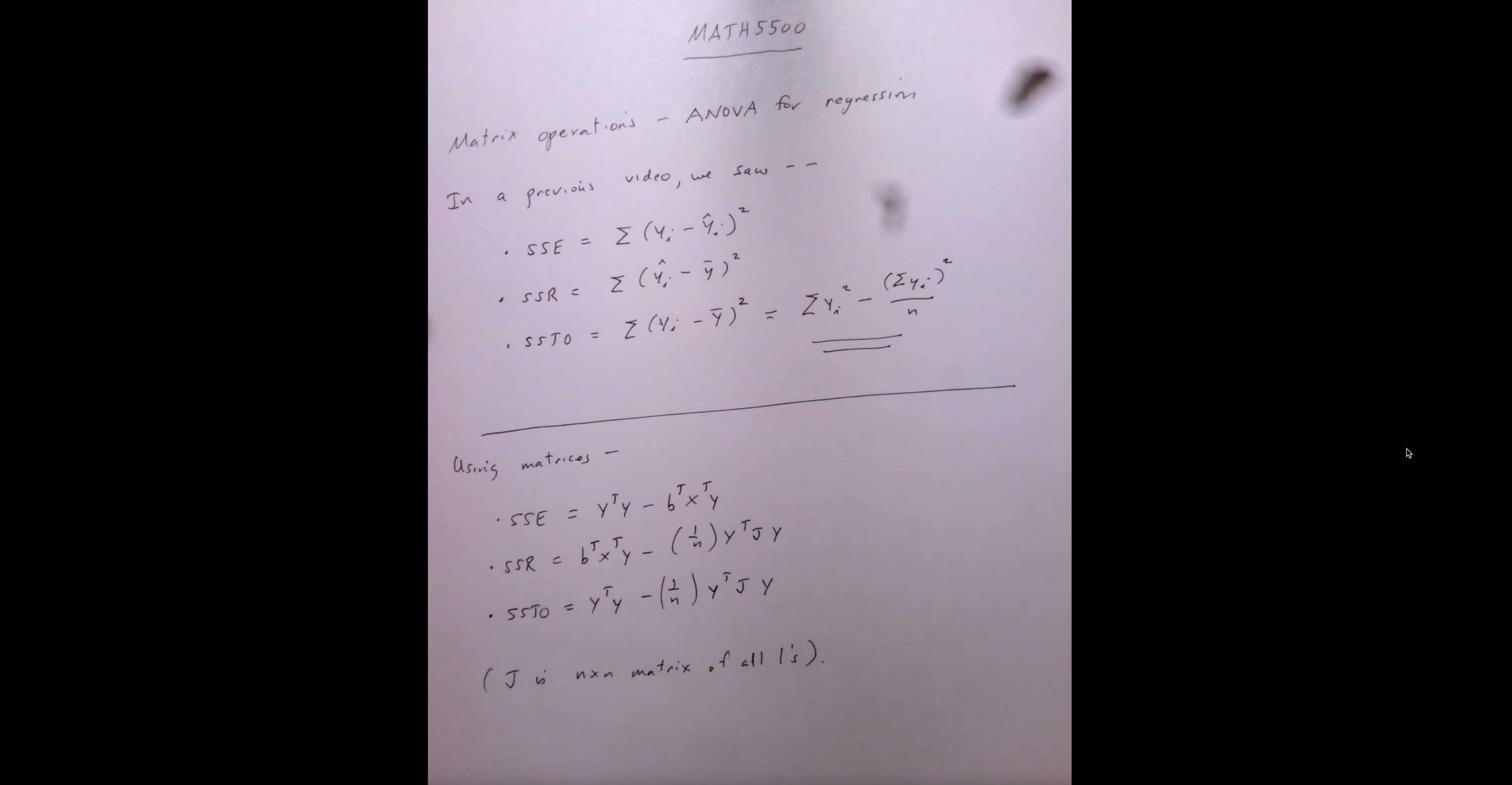Previously, in a video, we've seen that we can partition out the variance of the sum of squares total as a sum of the sum of squares error and the sum of squares regression. Time for coffee.